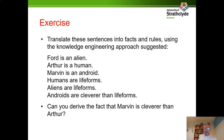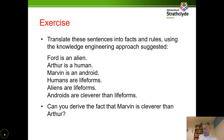Here's a knowledge engineering exercise. We have some sentences: Ford is an alien; Arthur is a human; Marvin is an android. Humans are life forms. Aliens are life forms. And androids are cleverer than life forms. Use the knowledge engineering approach to write those down as a set of facts and rules, then use them to derive the fact that Marvin is cleverer than Arthur. Have a go at that exercise and I will see you in the next video.